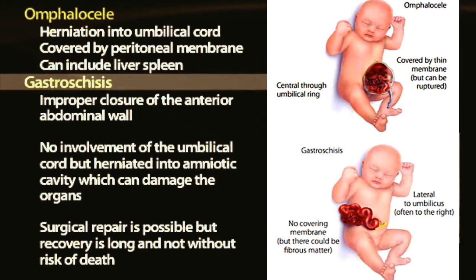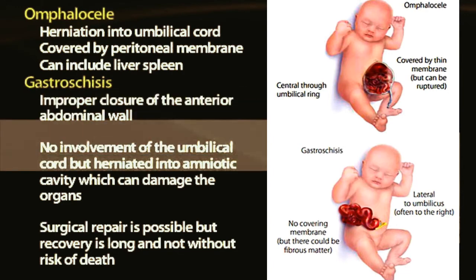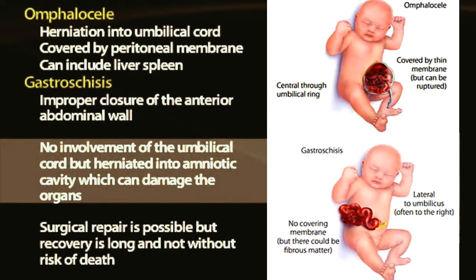A more serious condition is gastroschisis — remember that anything ending in 'schisis' is never good. There is an improper closure of the anterior abdominal wall, but there's no involvement of the umbilical cord, as it goes skirting past on the right side, typically. The organs actually herniate out into the amniotic cavity, where the amniotic fluid and exposure oftentimes damages them.